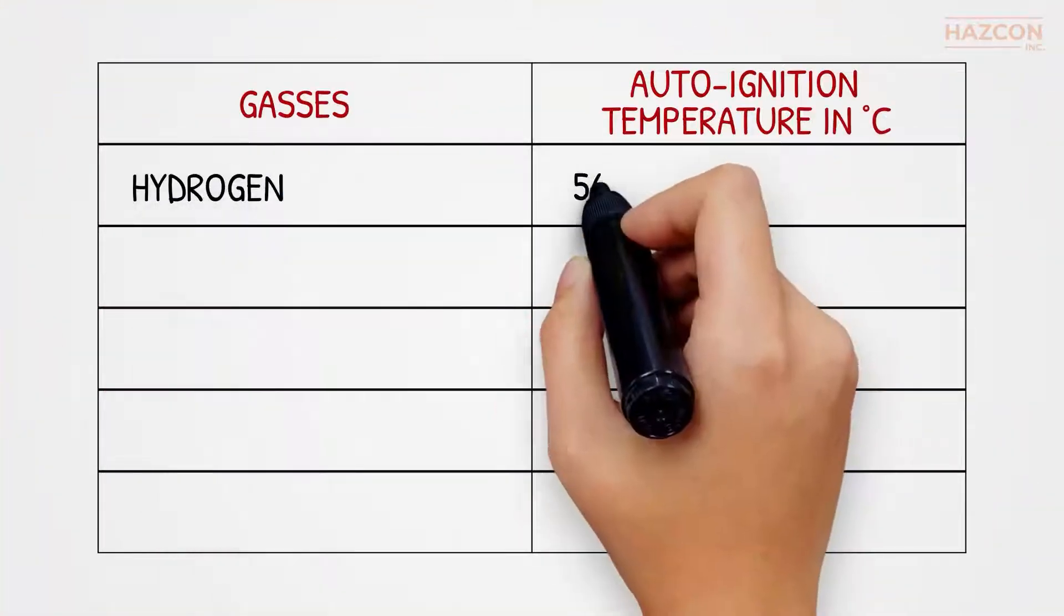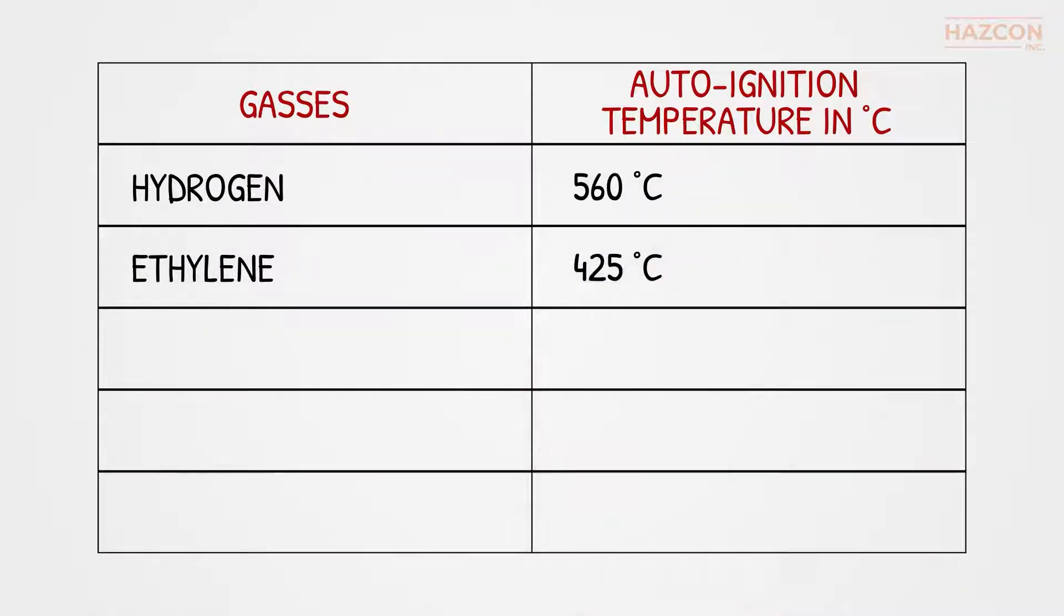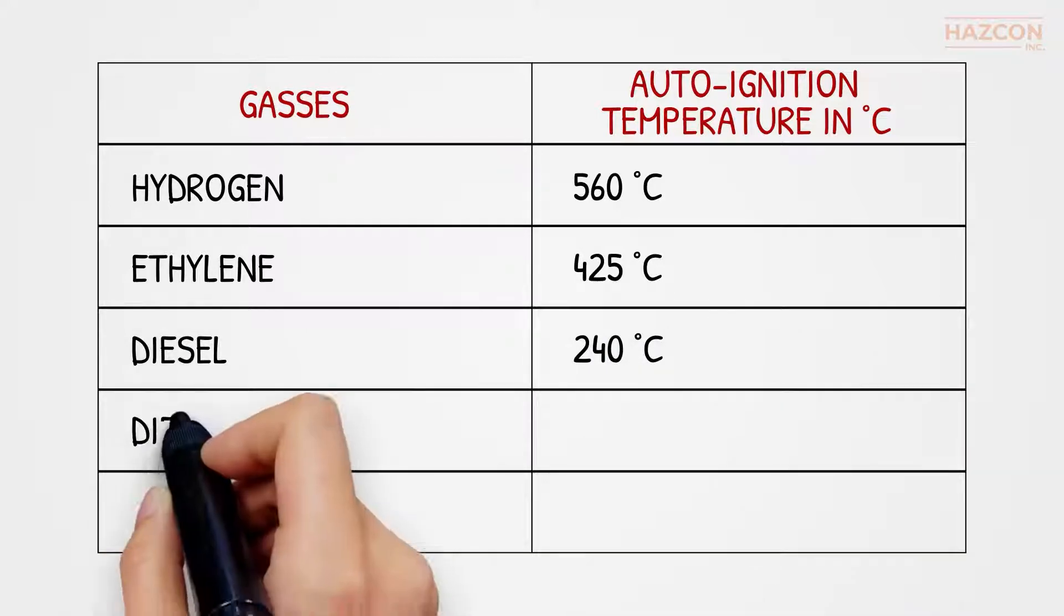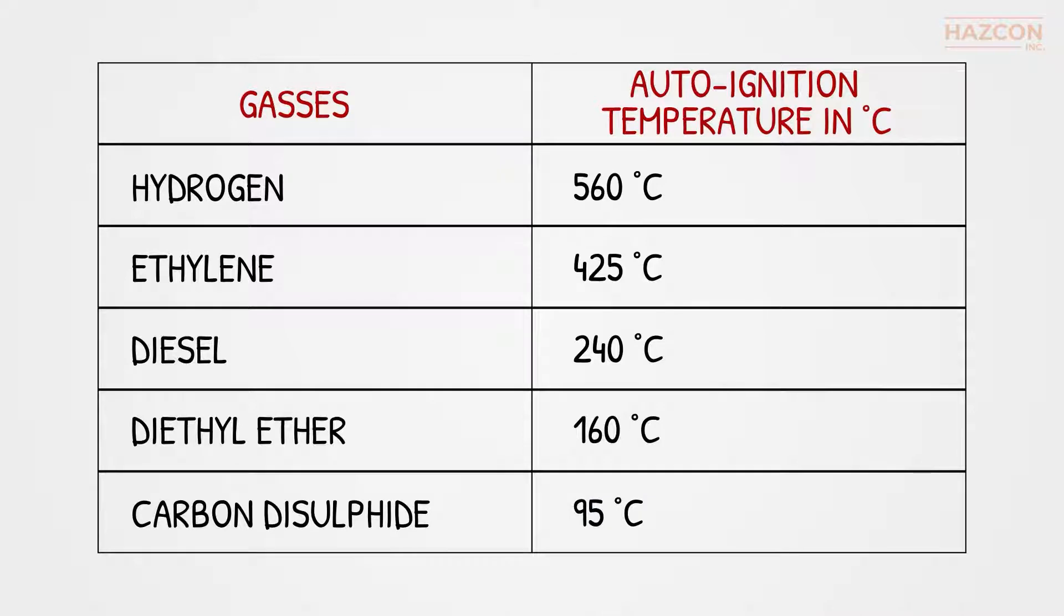For instance, hydrogen has an auto-ignition temperature of 560 degrees Celsius, ethylene 425, diesel 240, diethyl ether 160, and carbon disulfide has 95 degrees Celsius.